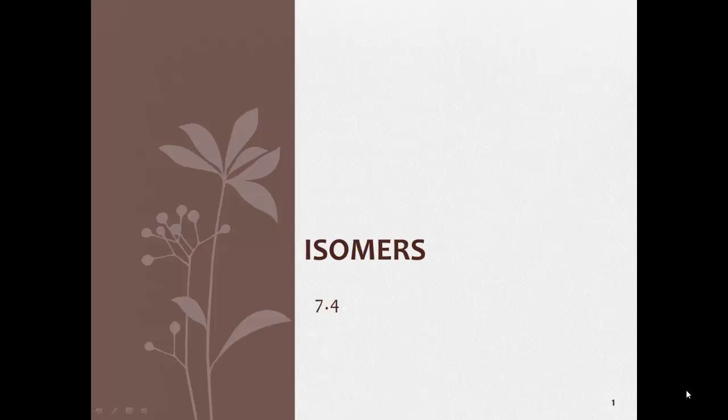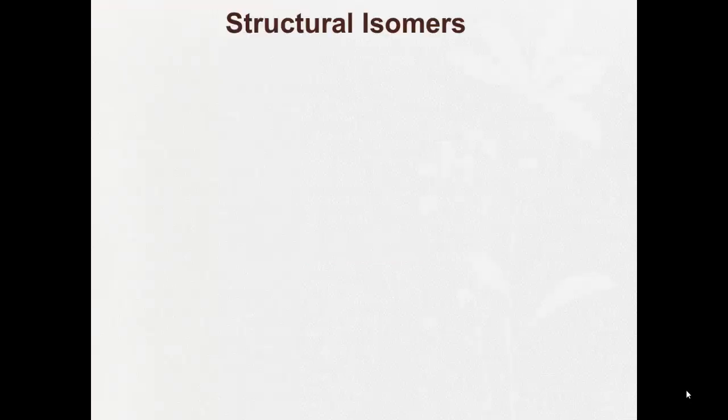Here we go, 7.4 isomers. Now, a key thing to remember in organic chemistry is the existence of structural isomers. And the best way to get questions about these right is just simply being careful and paying close attention. An isomer is something that has the same molecular formula but different structural formula. So it has the same numbers of carbons and hydrogens but they're just arranged differently.